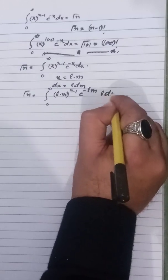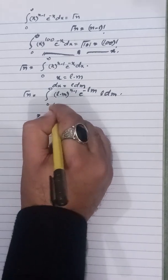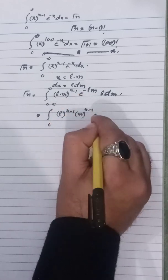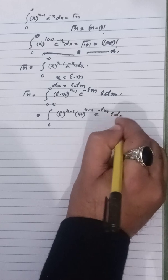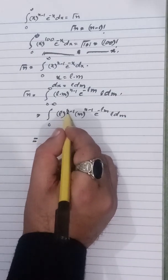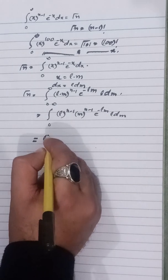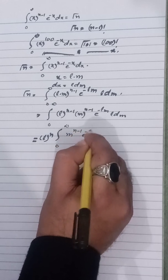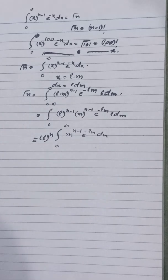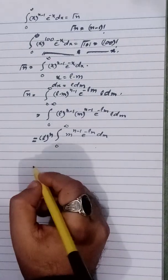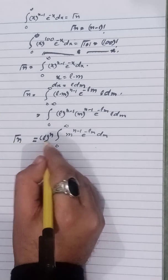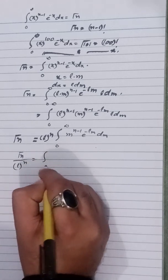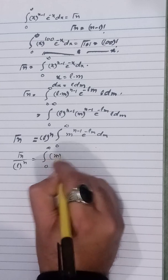Substituting x = lm and dx = l dm, we get Γ(n) = ∫₀^∞ (lm)^(n-1) e^(-lm) l dm, which equals l^(n-1) · l · ∫₀^∞ m^(n-1) e^(-lm) dm = l^n ∫₀^∞ m^(n-1) e^(-lm) dm. Dividing both sides by l^n gives Γ(n)/l^n = ∫₀^∞ m^(n-1) e^(-lm) dm.